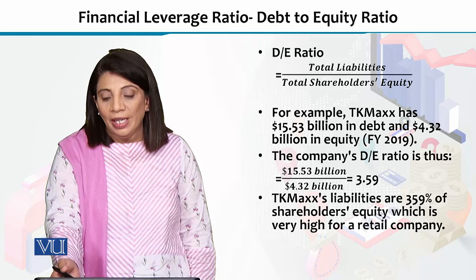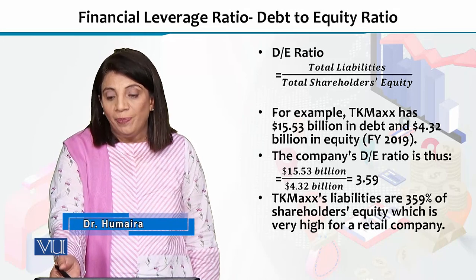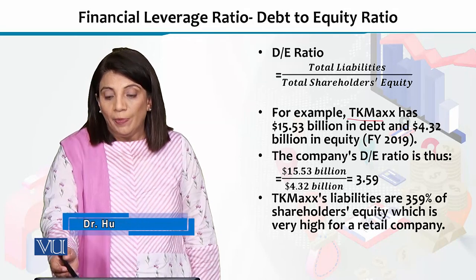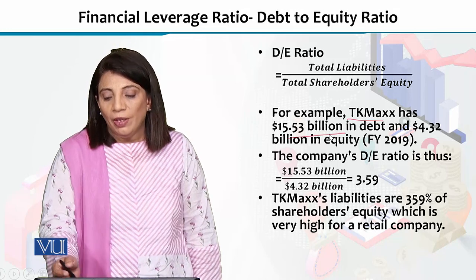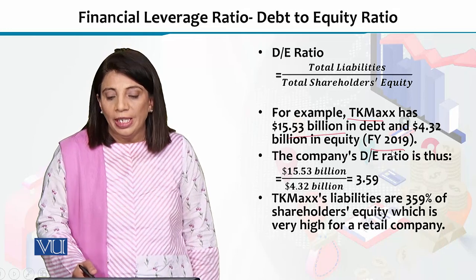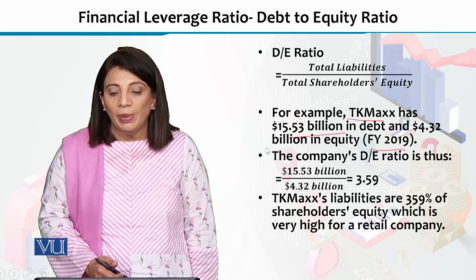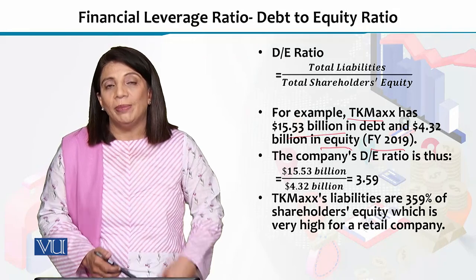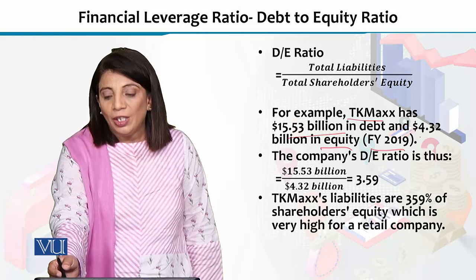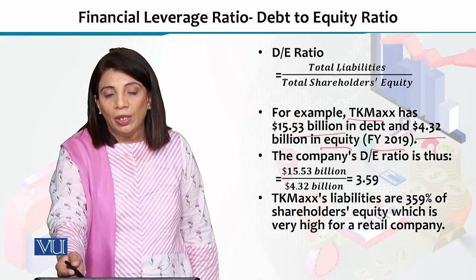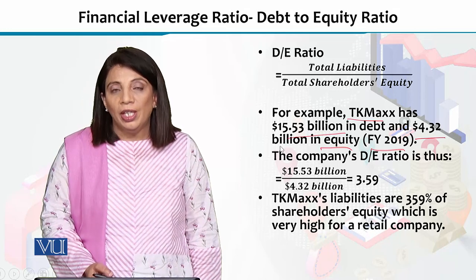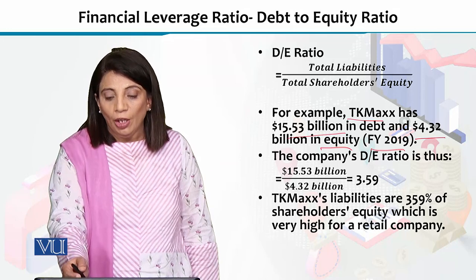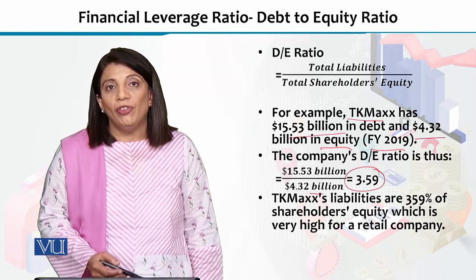For explaining the debt to equity ratio, I'm using real-time data. TK Maxx is a big store. The debt in fiscal year 2019 is $15.53 billion, and the equity is $4.32 billion. As the formula goes, we keep $15.43 billion in the numerator and $4.32 billion in the denominator, and the value turns out to be 3.59.